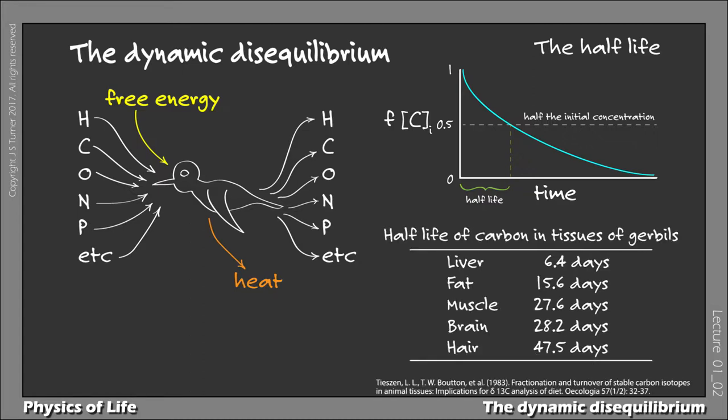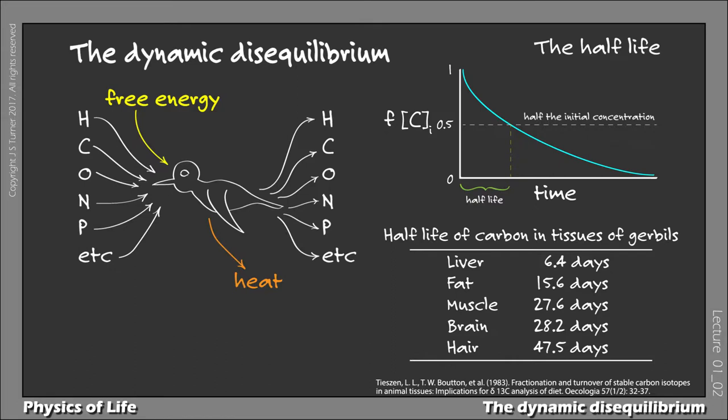And here are some results taken from a study of carbon turnover rates in gerbils. You can see that the half-life of carbon varies quite a bit in different tissues, ranging from 6.4 days in the liver, all the way up to 47 and a half days in hair.